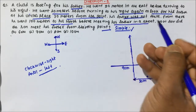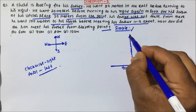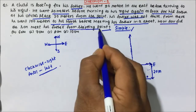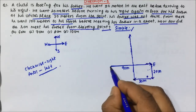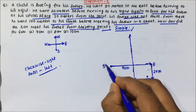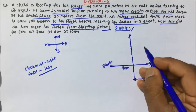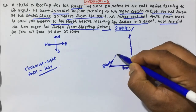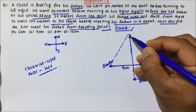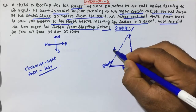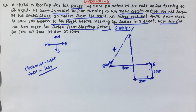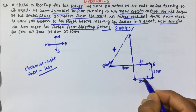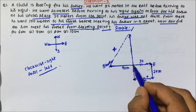He went 100 meters to his north before meeting his father in a street — that means his father was somewhere here. How far did the son meet his father from the starting point? The starting point is here and where the child found his father is here. So basically this distance — this X — you have to calculate.